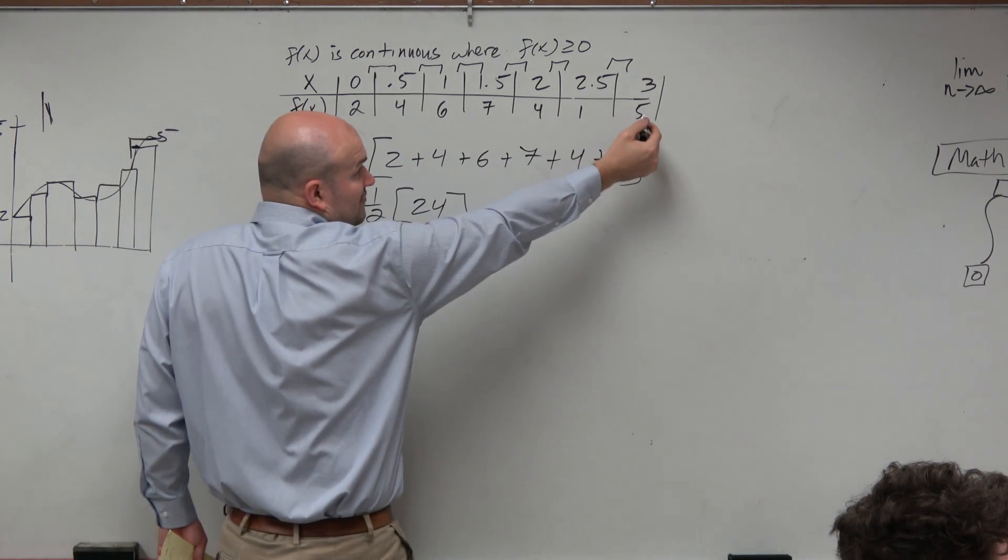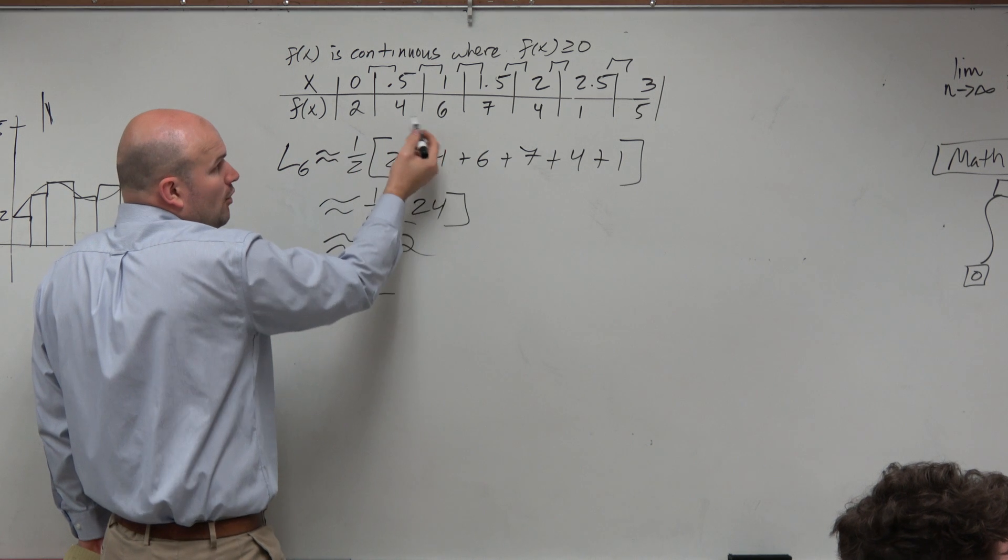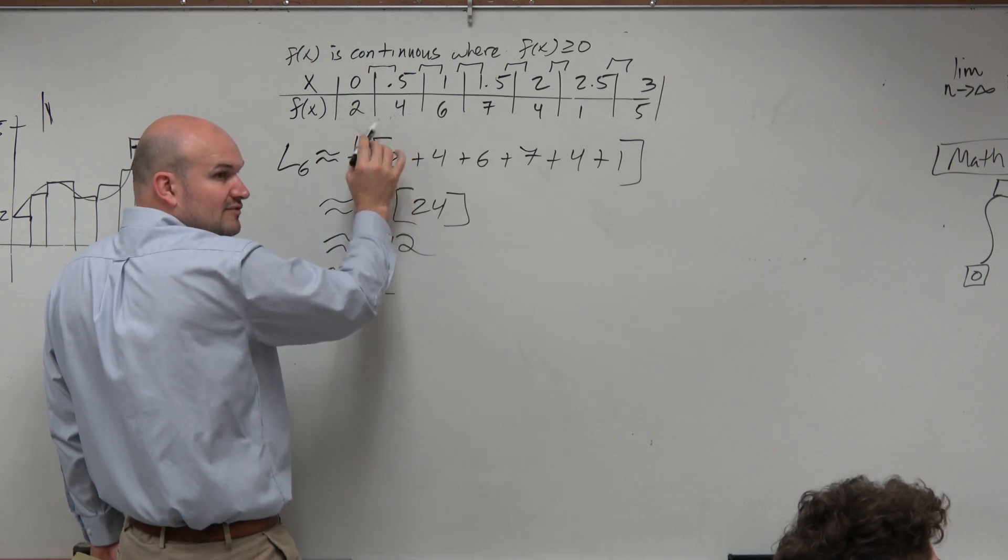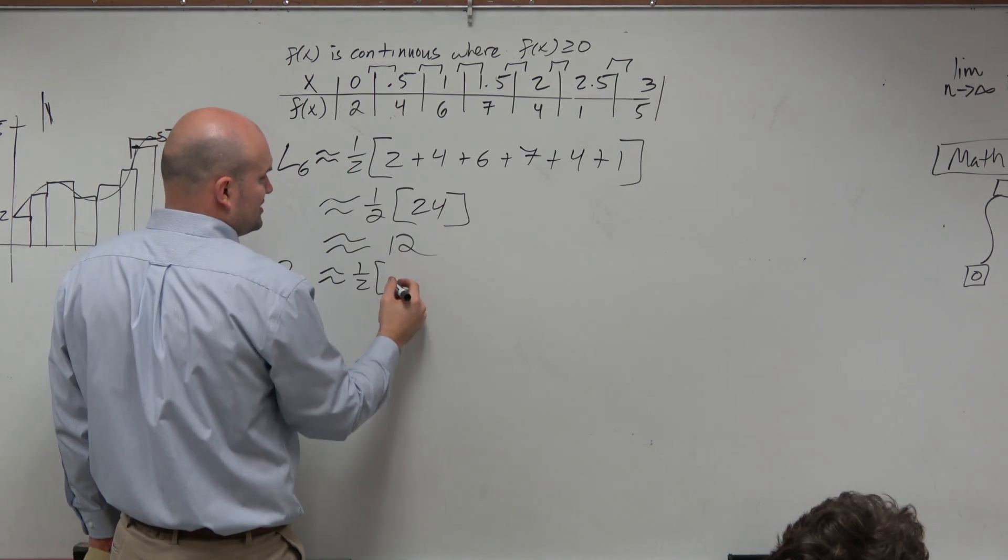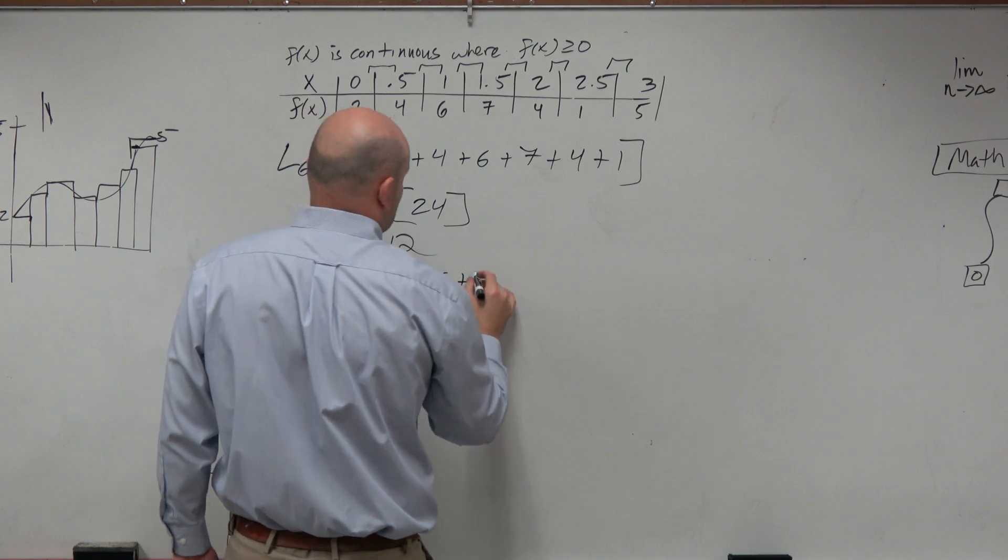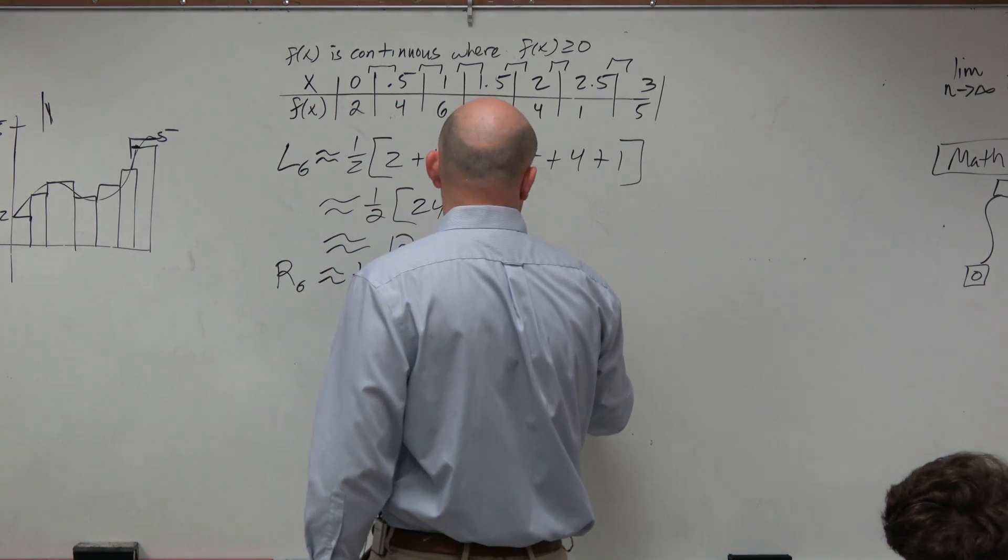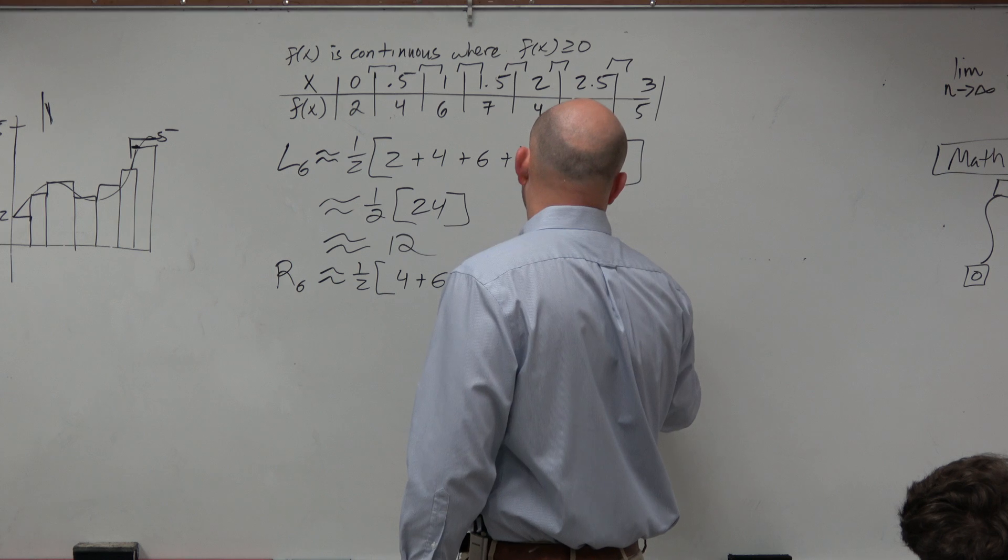So you could start from 5 and work your way backwards if you wanted to. Or you could just realize you're going to end at 4, like 4 is the first one over. So you could just start at 4 plus 6 plus 7 plus 4 plus 1 plus 5.